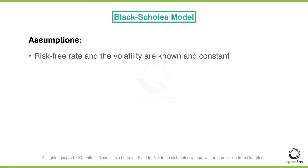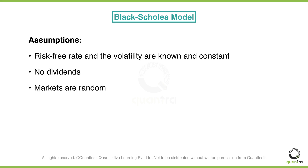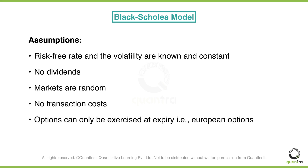It assumes that the risk-free rate and the volatility of the underlying asset are known and will remain constant until the option expires. No dividends are paid throughout the life of the options. Markets are random. There are no transaction costs. The option can only be exercised at expiry — in other words, all options are European options. And the returns of the underlying asset are normally distributed.